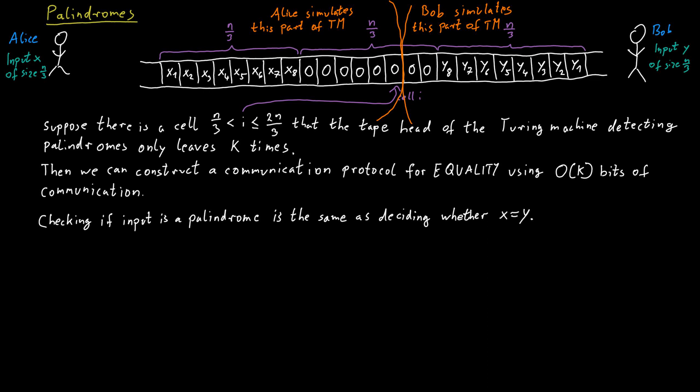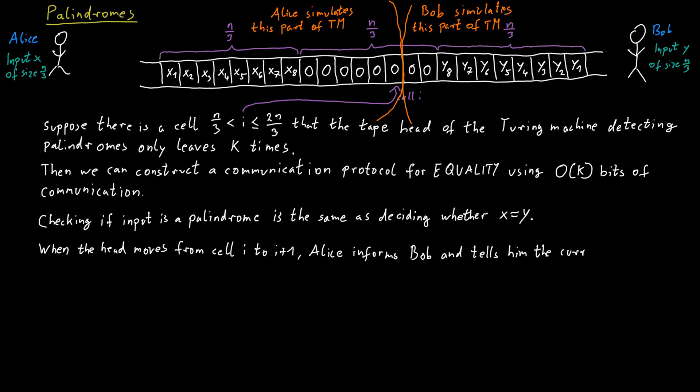What does Bob need to know? He already knows what is written on his cells — cells i+1 and to the right. What he needs from Alice is the current internal state of the Turing machine. So Alice tells Bob the internal state, say Q, and Bob can continue the simulation perfectly, since he knows the state and the contents of his cells. He continues until the head moves back to the left, crossing from cell i+1 back to cell i into Alice's part, at which point Bob hands the simulation back to Alice and tells her the new internal state Q′. They keep doing this back and forth, and in this way they are able to decide the palindrome question, and therefore whether x equals y.